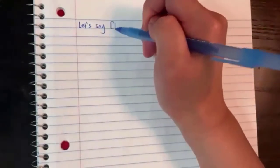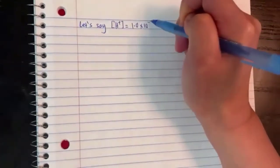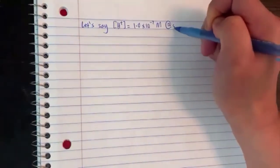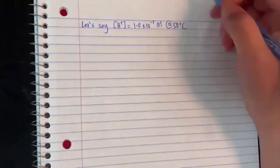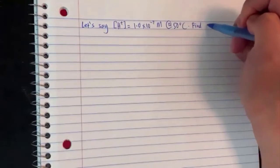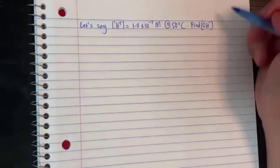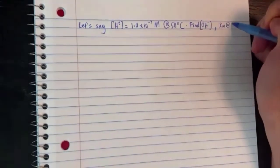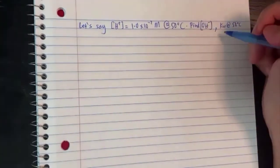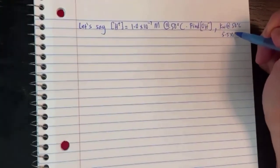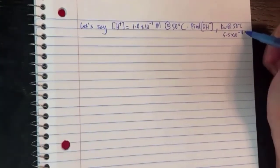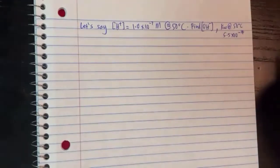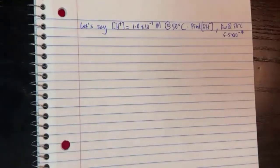Let's say H⁺ concentration is found to be 1.0×10⁻⁷ molarity at 50 degrees Celsius. Find OH⁻ concentration, and KW at 50 degrees for water was 5.5×10⁻¹⁴.